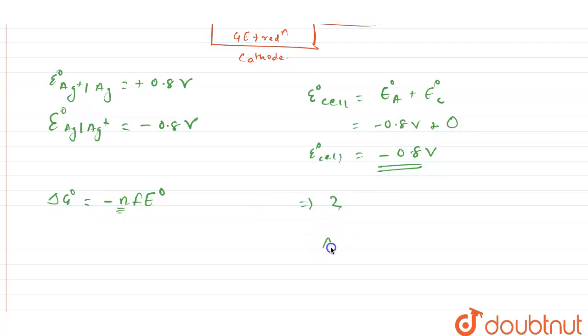And here n value is equal to 2. Why? Because Ag from elemental state is going to Ag⁺ and to Ag⁺. So total of two electrons is being involved over here. Therefore, the value for n is 2.